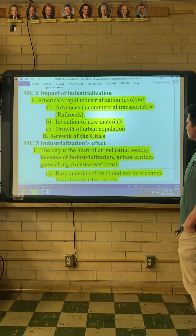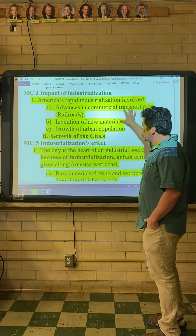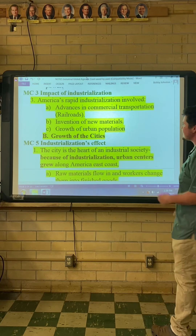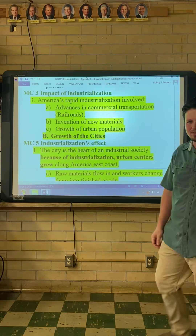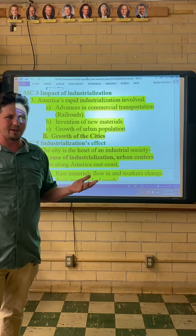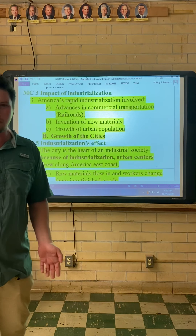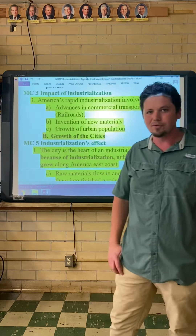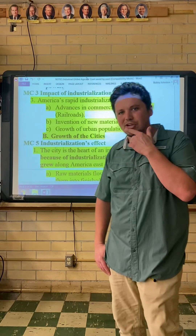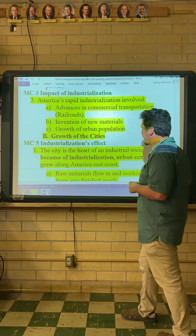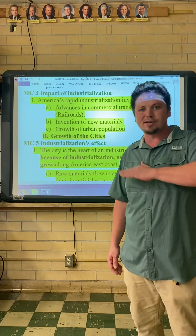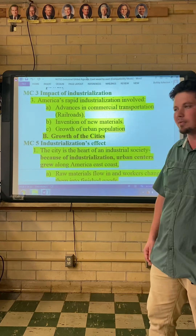America's rapid industrialization involved several things. One is advances in commercial transportation, like railroads. When civilization first began, pretty much every community was put next to water — for drinking, food, and transportation. But by the 1800s, we have railroads, which means you don't have to live next to water. You can stretch out all across America, like we did during the Migration West.